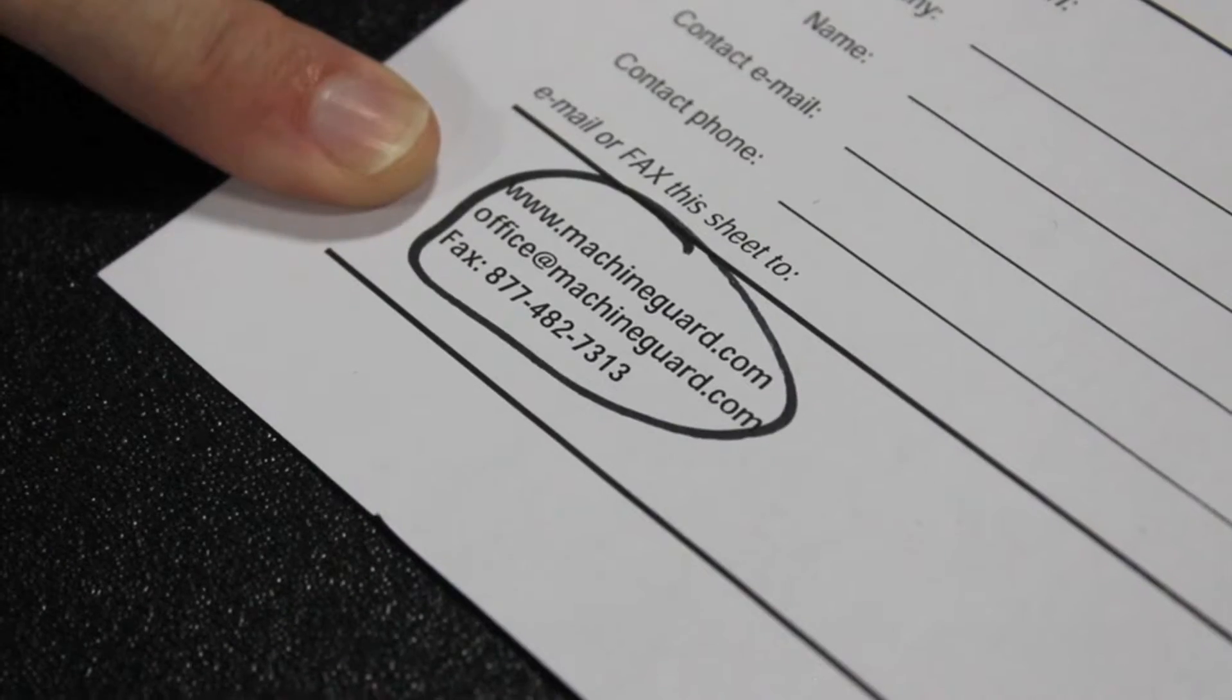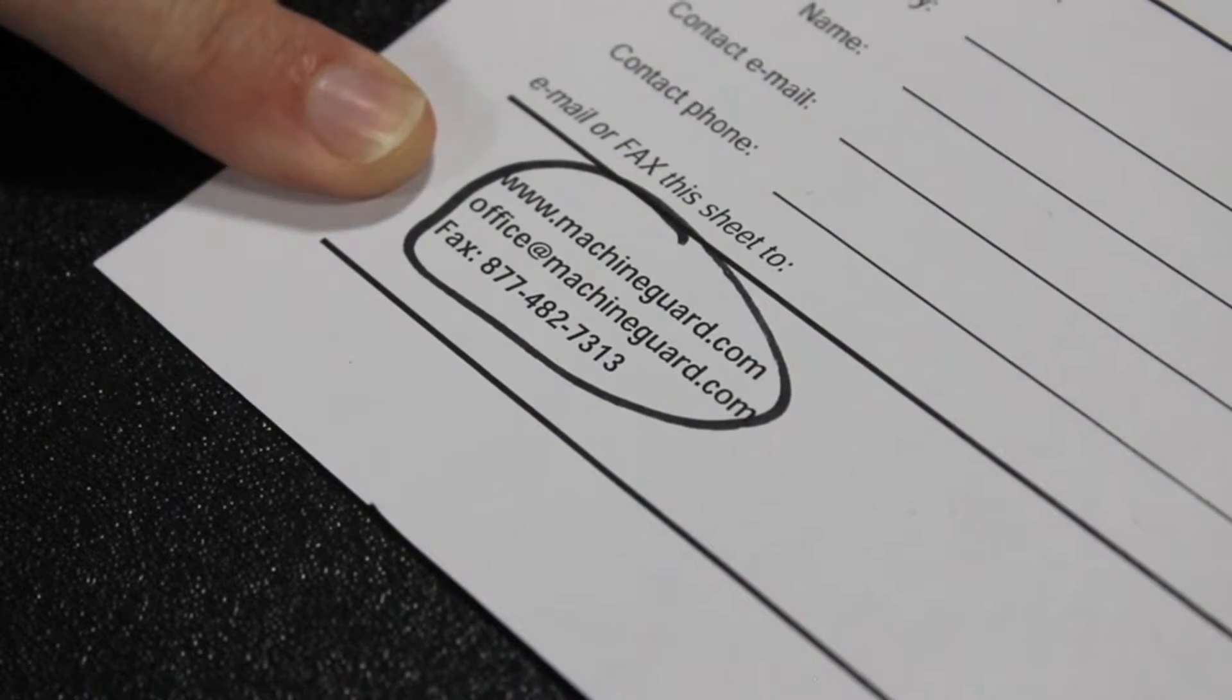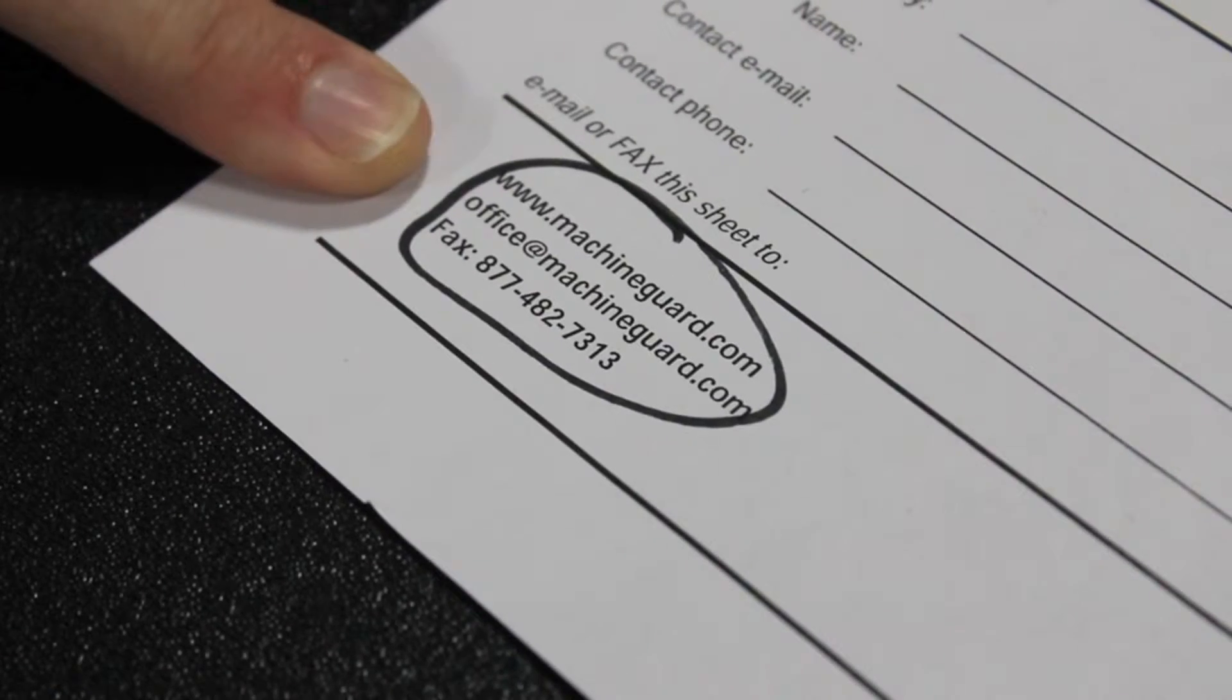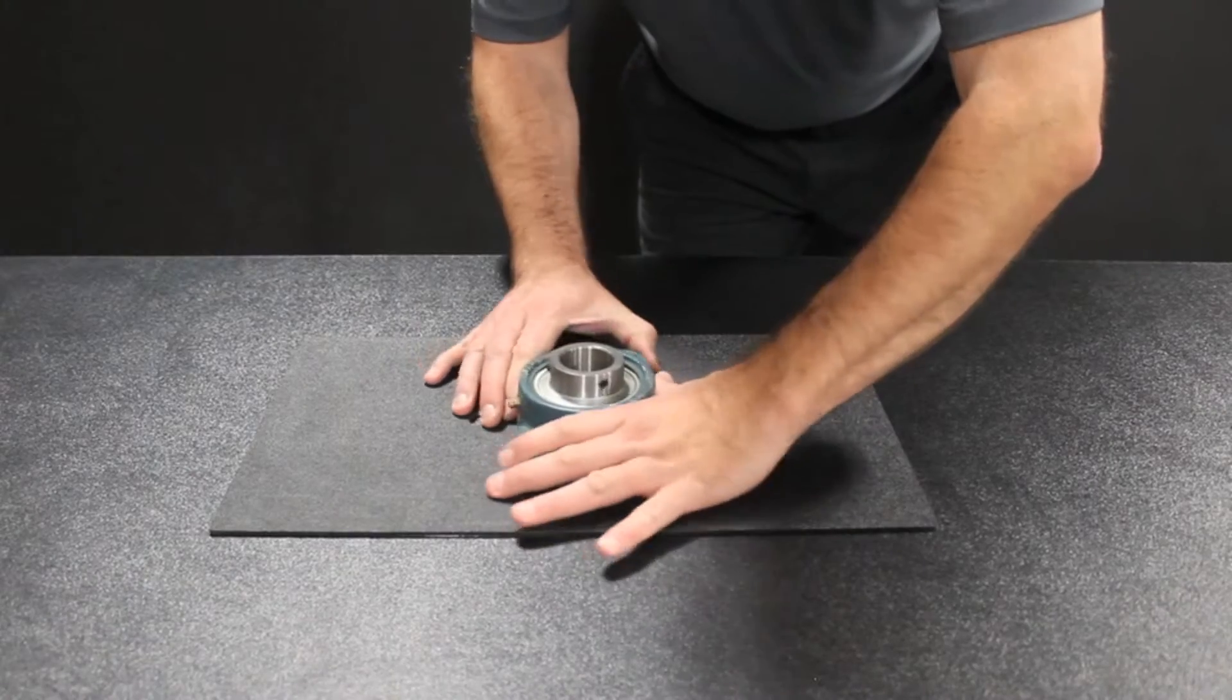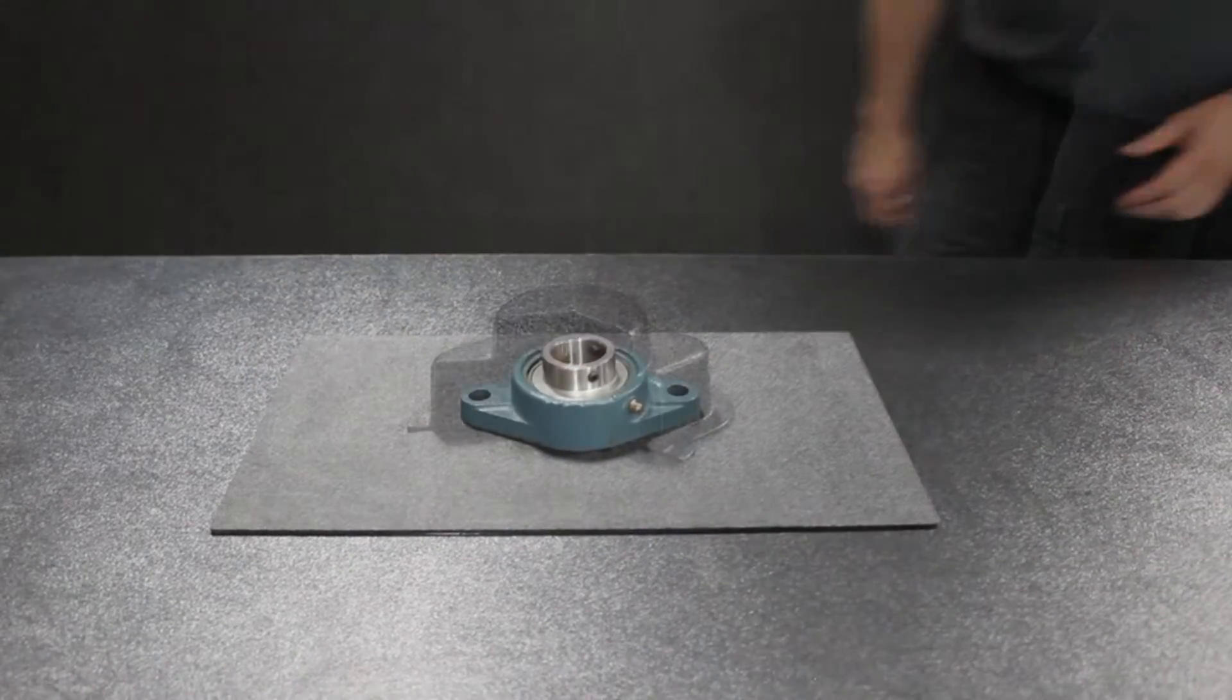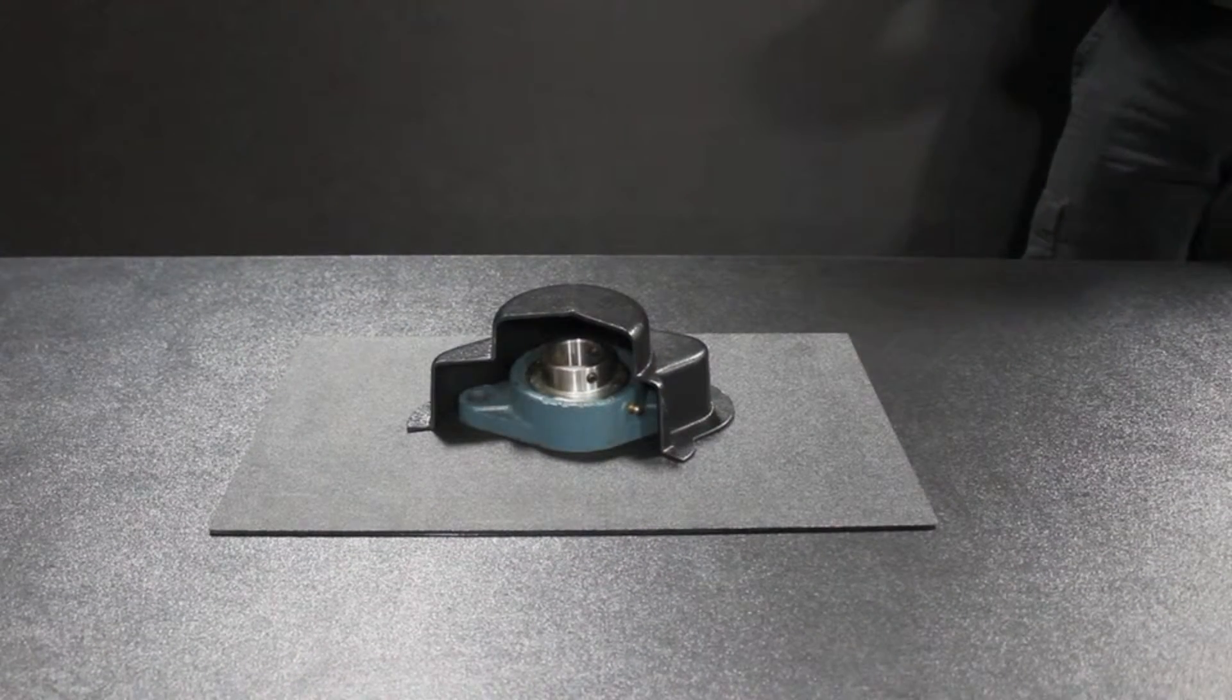Fill out the contact information section of the PDF and email or fax it to Machine Guard and Cover Company. When completed, you will receive a guard appropriately sized for your bearing.